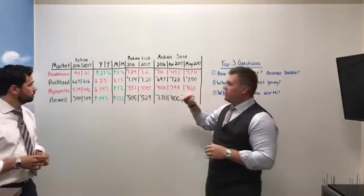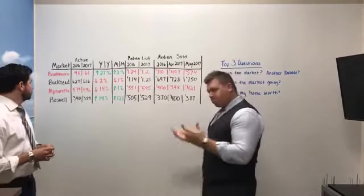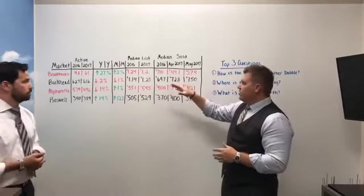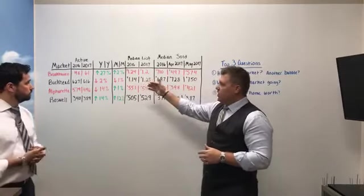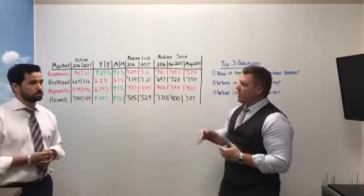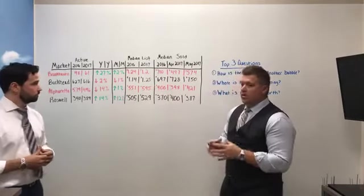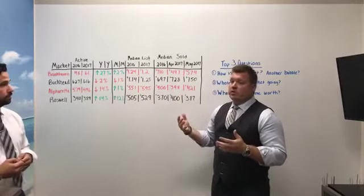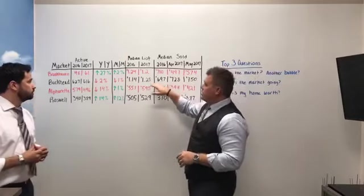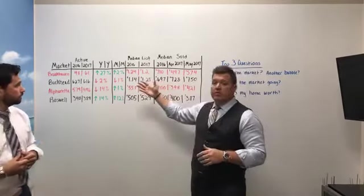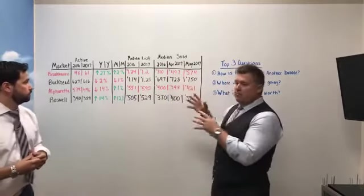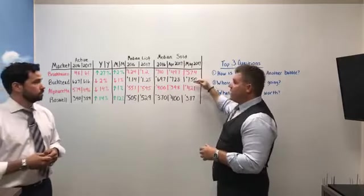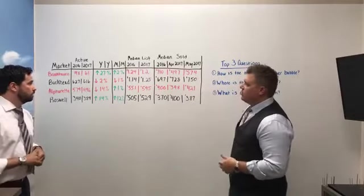Jumping down to the Buckhead market, most people in Metro Atlanta know Buckhead is pretty sought after with typically more expensive price points. The interesting part is we did not see the seasonality uptick as far as inventory goes in the Buckhead market. Actually, inventory is down year over year by 2% and month over month it's down 1%. So even fewer homes are available. The median list price in Buckhead in 2016 was $1.14 million; this year it's $1.25 million—prices are going up. Median sold price in 2016 was just under $700,000; in 2017 we're up to $750,000. So prices are going up in both these marketplaces.